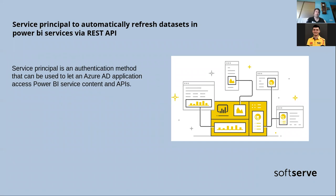Service principal. What do we need a service principal for? A service principal lets you do something with your applications without a user. It's created as an Azure Active Directory registration within your tenant to perform unattended resource and service-level operations. Before using a service principal in Power BI — for example, in my demo — you need to give full access for your service principal to the workspace and all necessary permissions as a member or admin.